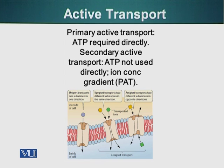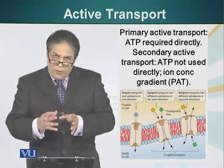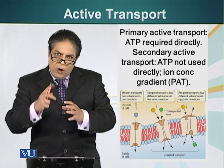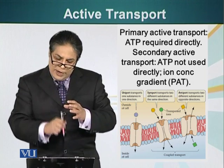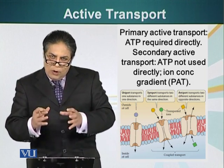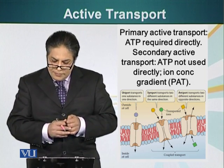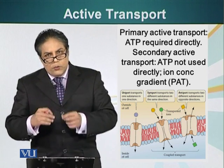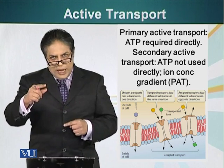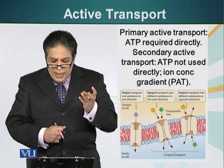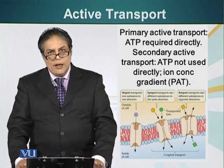In this category, there are three different types of transporters. Uniport transporters are proteins that go through the plasma membrane and are hollow inside, allowing only one molecule to pass through in one direction. Symport allows two different molecules to pass through in the same direction. Antiport allows two molecules to traverse the plasma membrane in opposite directions. So we have uniport, symport, and antiport. In the next module, we will look at vesicle formation.